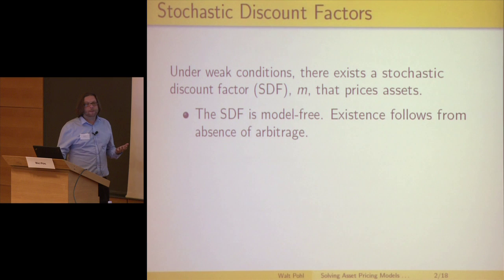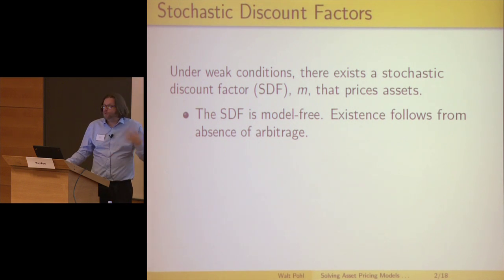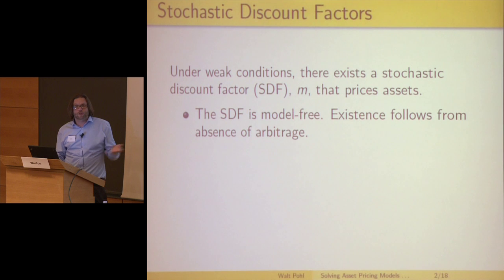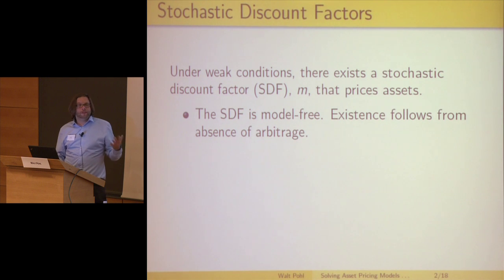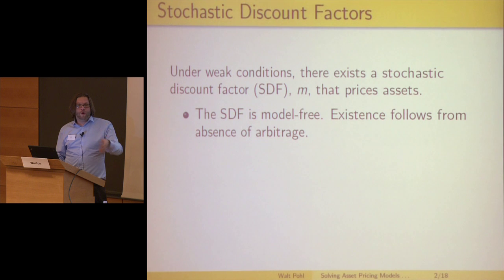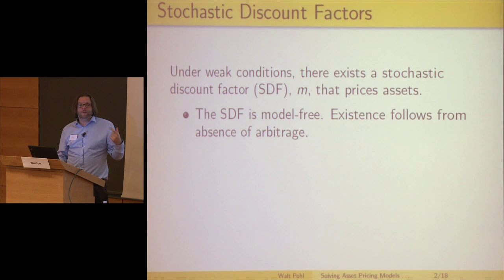What's nice about it is that this is model free. Given these rather weak conditions where you can produce one of these discount factors, you can proceed. It just follows from the existence of no arbitrage — if there are no assets that are the same but have multiple prices, then generally there exists a stochastic discount factor. There are some technical conditions but I don't think they really bite in practice.